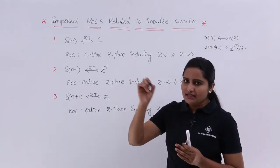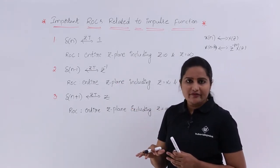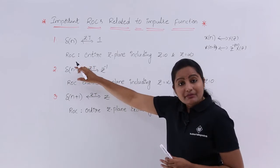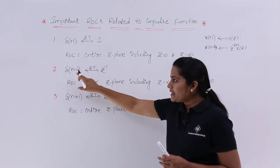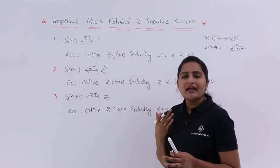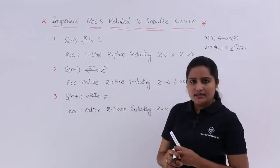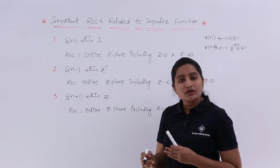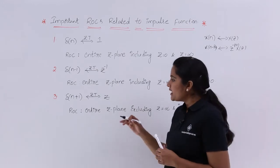That pole starts at 0, so Z=0 is not included. Always please keep in mind about δ[n-1]: its ROC is the entire Z-plane including Z=∞ but excluding Z=0.